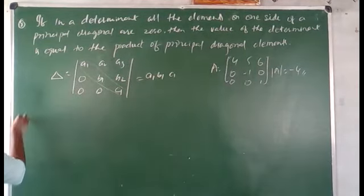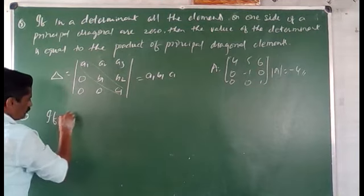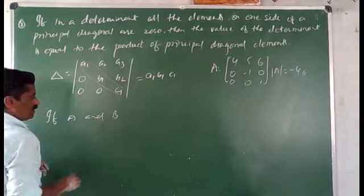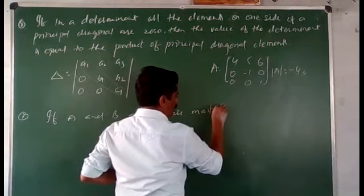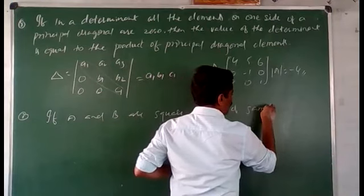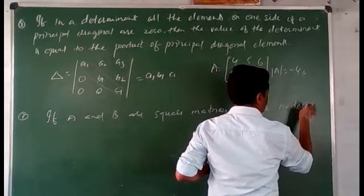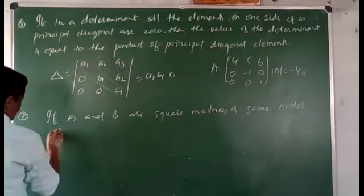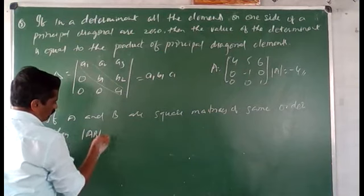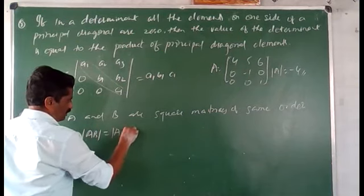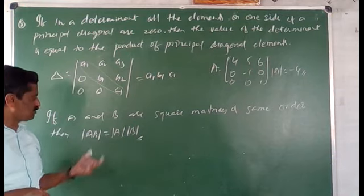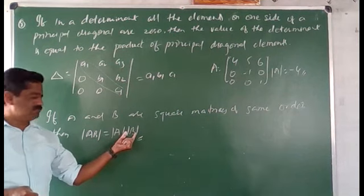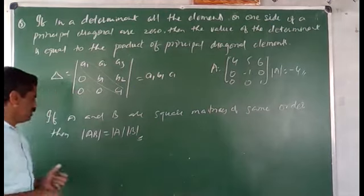The last property: if A and B are square matrices of the same order, then the determinant of AB equals the determinant of A into the determinant of B. So these are all the properties of determinants.